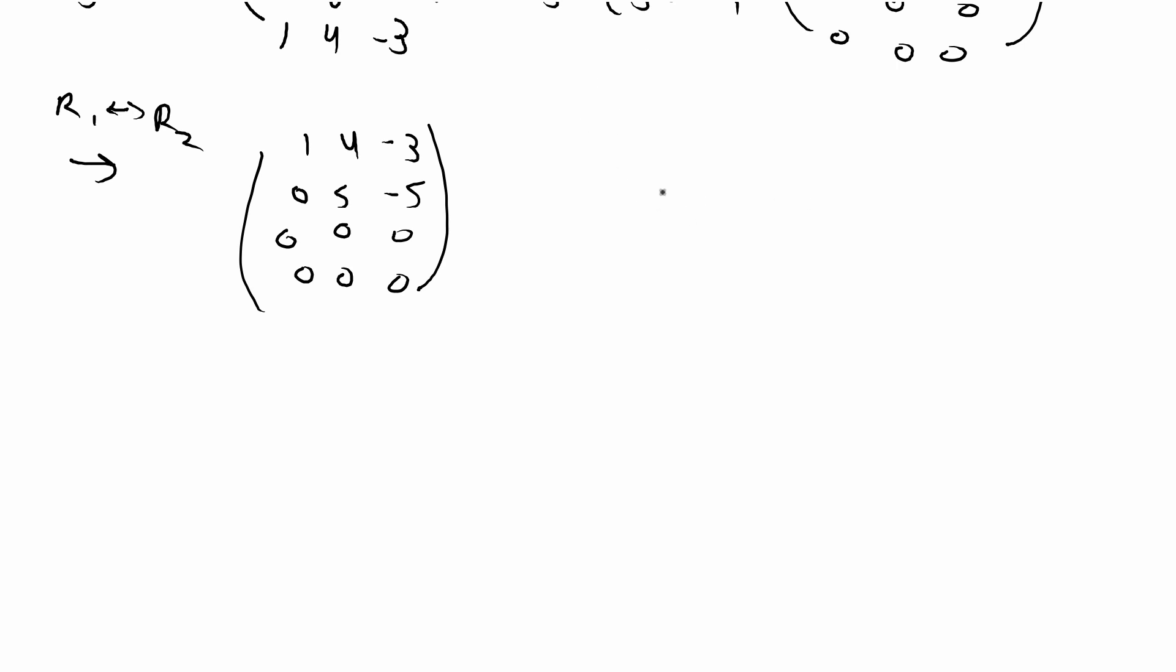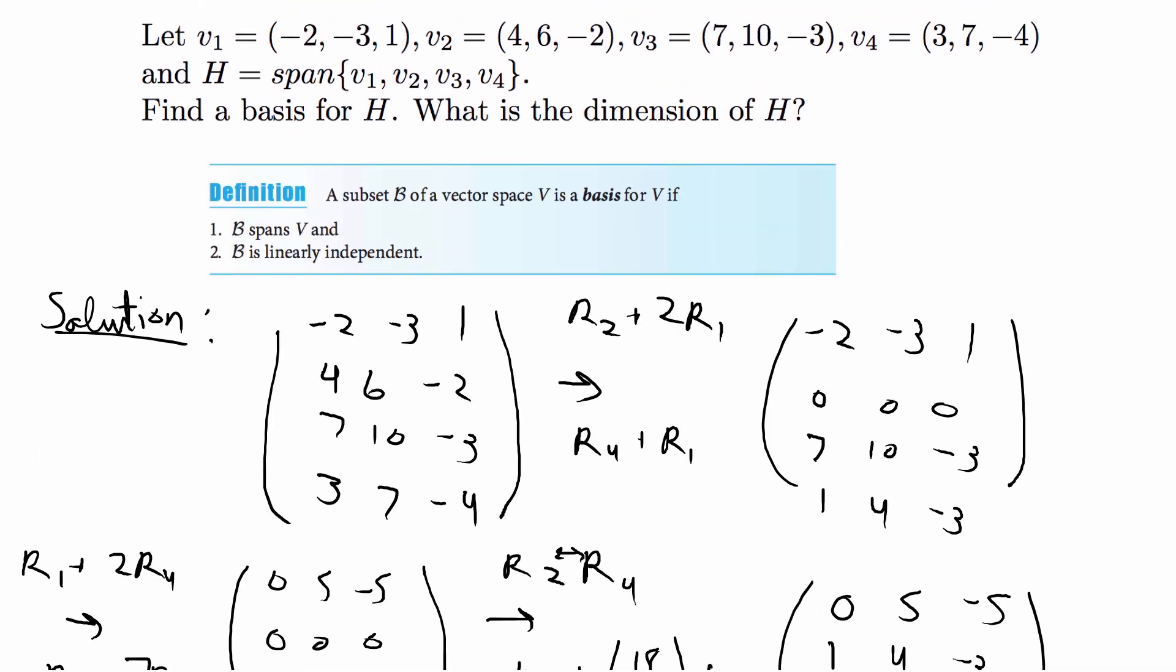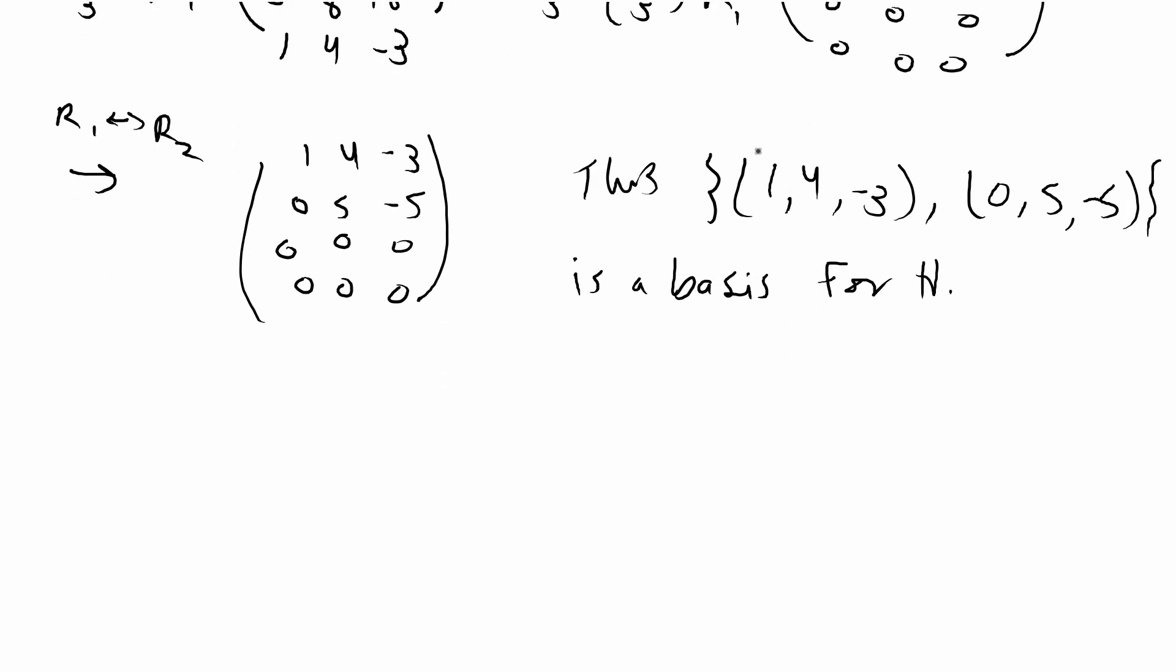So now we're ready to solve the problem. So I'm going to say thus the set of these two vectors 1, 4, negative 3 and 0, 5, negative 5 is a basis for h. And by definition the dimension of h which is abbreviated dim h is the number of vectors in a basis for h. So in this case the number of vectors is 2 so the dimension of h is equal to 2 and we are done with this problem.